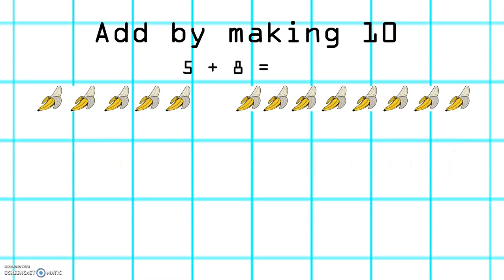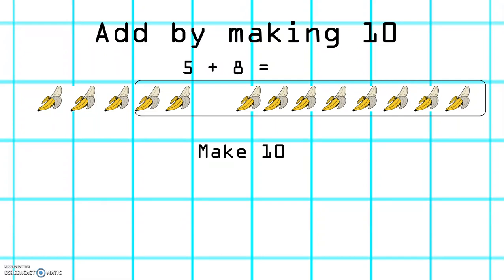Another method we could use to add is to add by making 10. Here we have the problem 5 plus 8. What we can do is we can make 10. This makes it a little bit easier to add. So we have 8 plus 2, which gives us 10, and we've got 10 plus 3 equals 13. So 5 plus 8 equals 13.